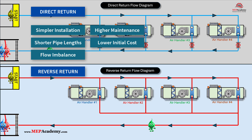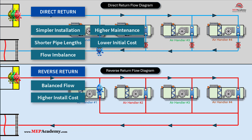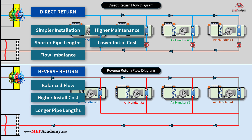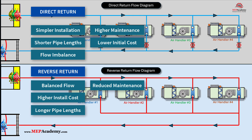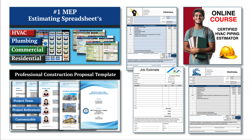Reverse return piping: naturally balanced flow — the design ensures equal pipe lengths to and from each terminal unit, aiding in consistent flow and easier balancing. However, more piping material and complex routing increase initial costs and installation time. Longer total pipe length requires additional piping to loop back the return path, impacting space and cost. Reduced maintenance — less need for frequent adjustments due to the self-balancing nature of the system. These points highlight the trade-offs between the simpler, cost-effective direct return and the more balanced but costlier reverse return systems.